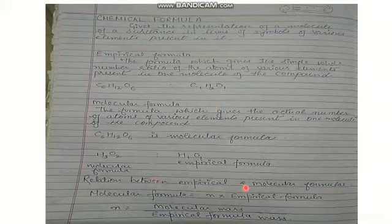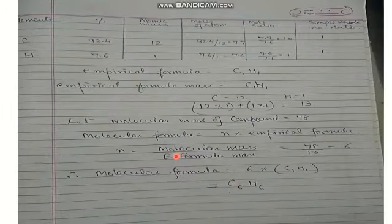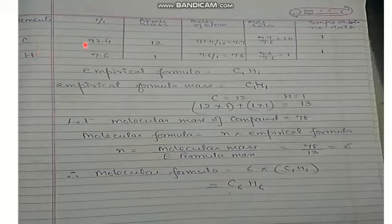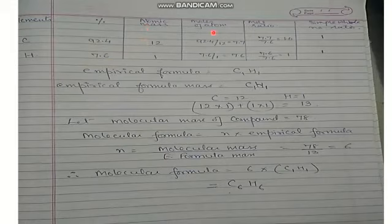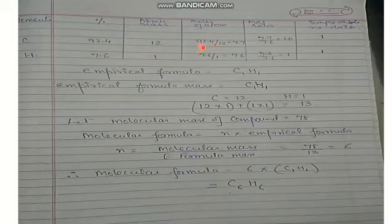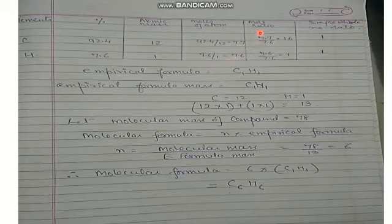The relation between empirical formula and molecular formula is: molecular formula = N × empirical formula, where N = molecular mass / empirical formula mass. To find the empirical formula, we make a table with the elements present — here carbon (C) and hydrogen (H) — present in 92.4% and 7.6% respectively. The number of moles of each atom is found by: given mass (as percentage) / atomic mass. So for carbon: 92.4 / 12 = 7.7, and for hydrogen: 7.6 / 1 = 7.6. The mole ratio is each value divided by the smallest ratio, which is 7.6.